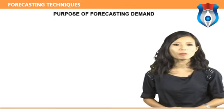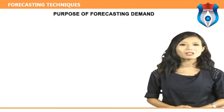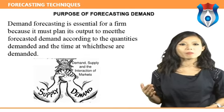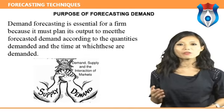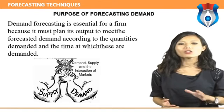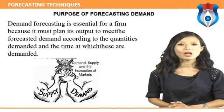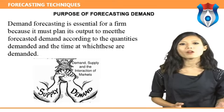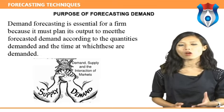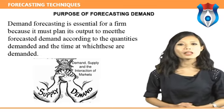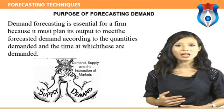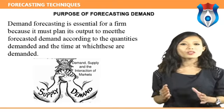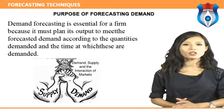Let us now understand the purpose of forecasting demand. Demand forecasting is essential for a firm because it must plan its output to meet the forecasted demand according to the quantities demanded and the time at which these are demanded. The forecasting of demand helps a firm to arrange for the supplies of the necessary inputs without any wastage of materials and time, and also helps a firm to diversify its output to stabilize its income over time.